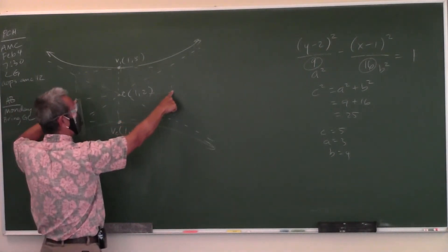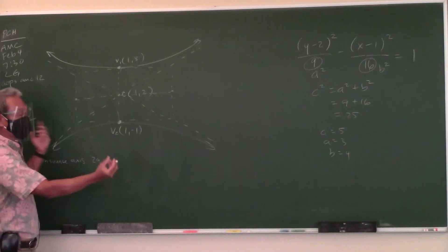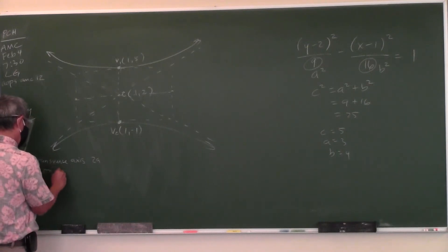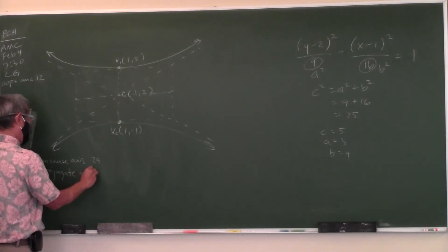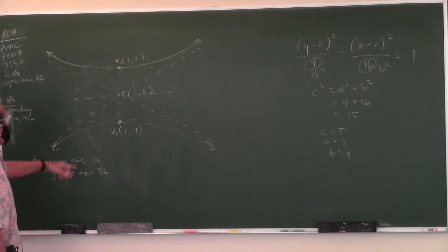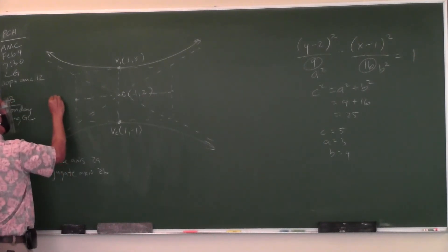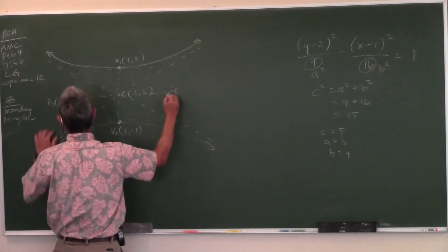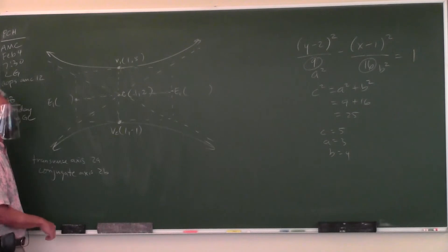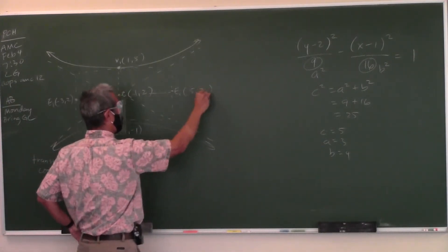The other axis can't be called the minor axis because it's actually bigger here — it's called the conjugate axis, and its length is always 2b. You go b = 4 left and right from the center. The endpoints of the conjugate axis are at (−3, 2) and (5, 2).